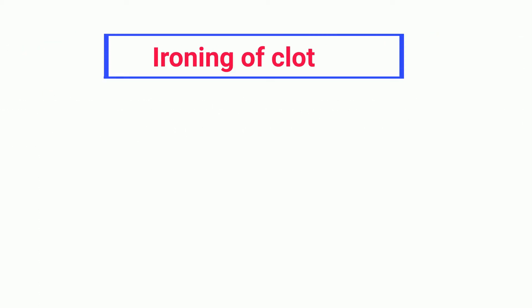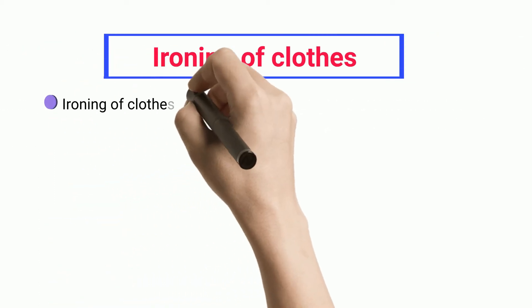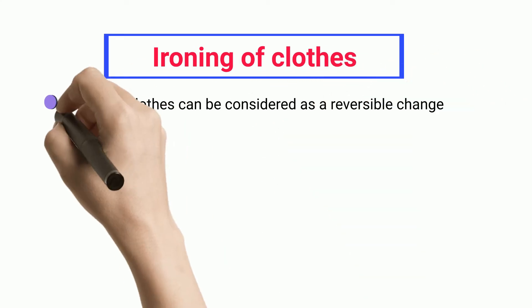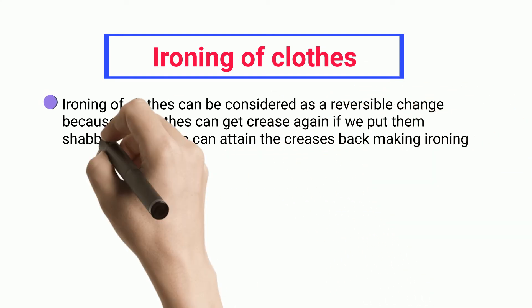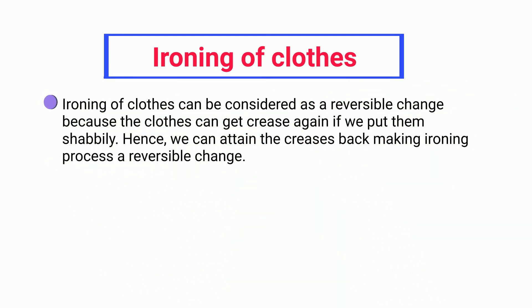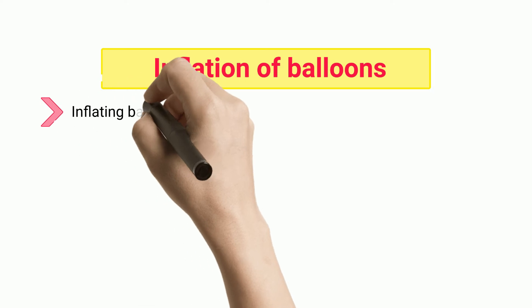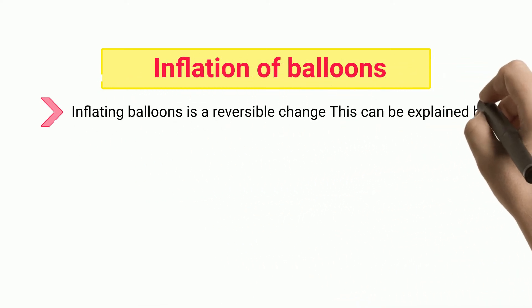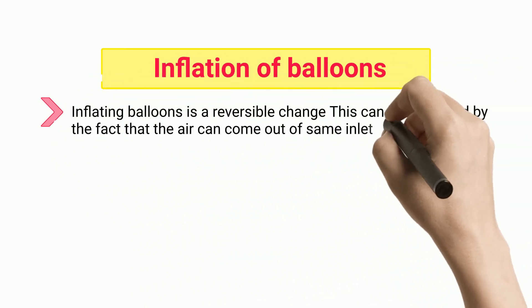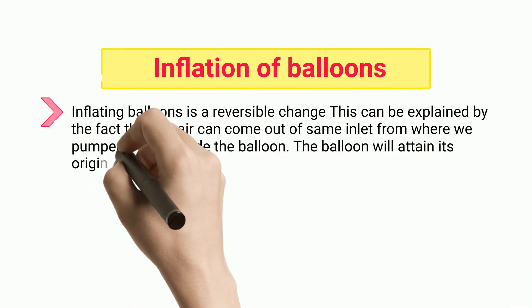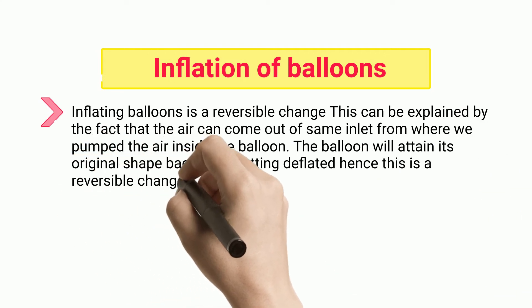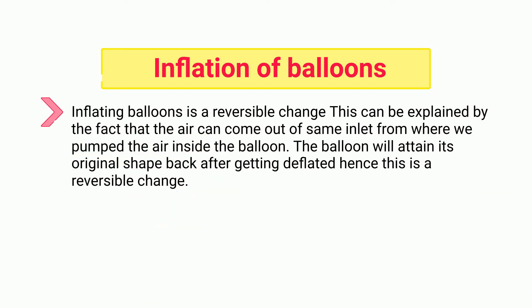Ironing of Clothes: ironing of clothes can be considered a reversible change because the clothes can get creases again if we put them shabbily. Hence, we can attain the creases back, making the ironing process a reversible change. Inflation of Balloons: inflating balloons is a reversible change. This can be explained by the fact that the air can come out of the same inlet from where we pumped the air inside the balloon. The balloon will attain its original shape after getting deflated, hence this is a reversible change.